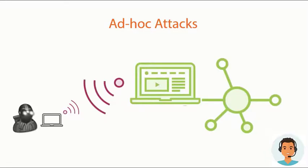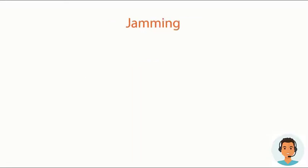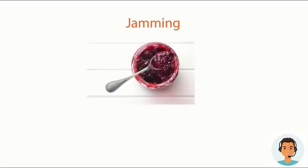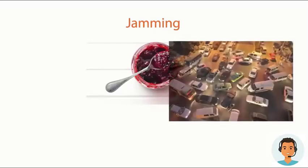So rule number 583: turn off your wi-fi if you're hooked in through ethernet. Another type of attack is via jamming.